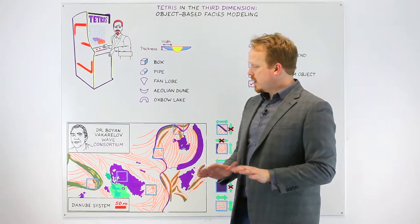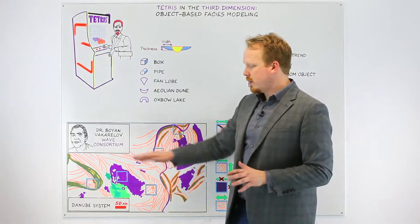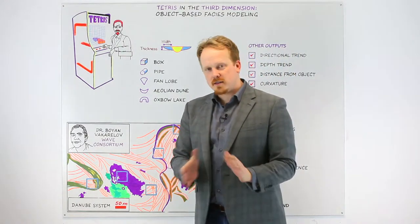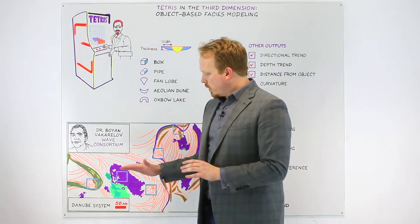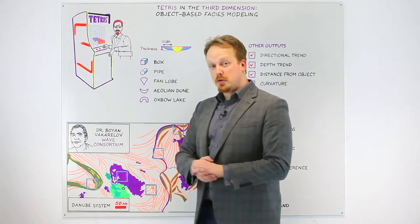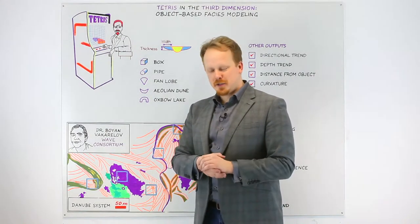I'm going to use as an example this complex fluvial system that Boyan from the Wave Consortium recently highlighted on a fantastic LinkedIn post, where he really showed how you can use Google Earth to understand the true complexity that can occur on a geocellular scale for a geological model.